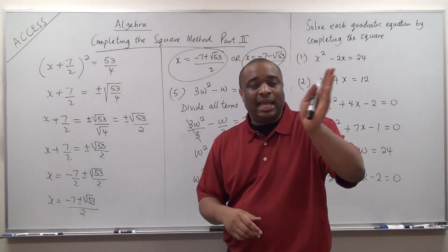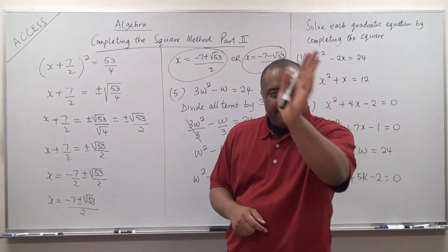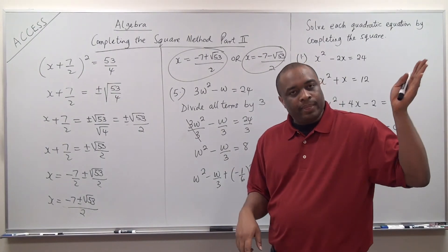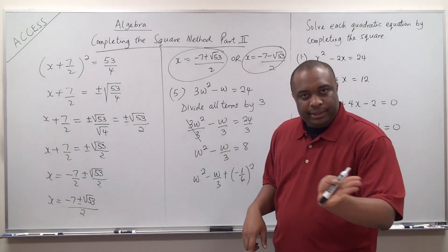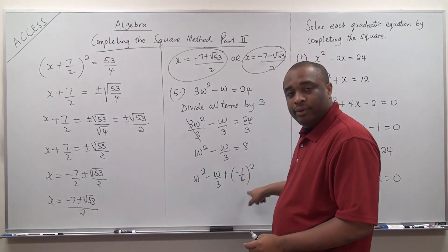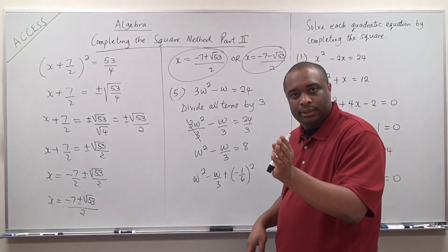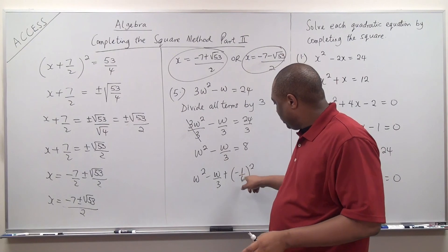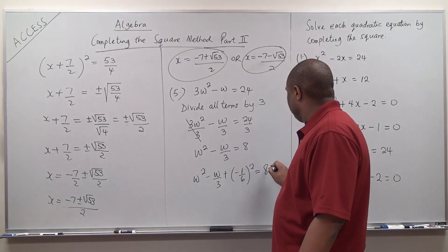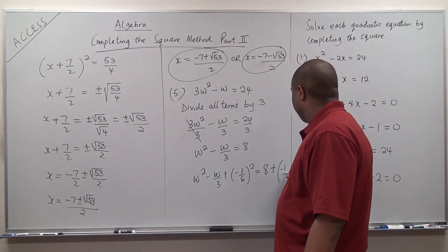Write it out just like I did in the first video. Coefficient of w is negative 1 over 3. Half of it: 1 half times negative 1 over 3 is negative 1 over 6. Square the result: negative 1 over 6 squared. And whatever you do to the left-hand side, you do to the right-hand side — 8 plus negative 1 over 6 squared.